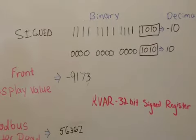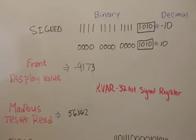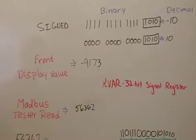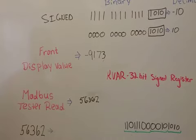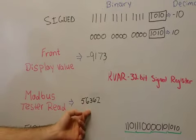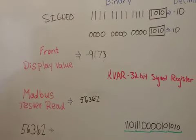So this gives us an interesting problem. What do we do when the front display value of a meter is reading a number such as this, and then when you go into Modbus Tester, it's reading a number and it comes up as this. So there's an obvious discrepancy.